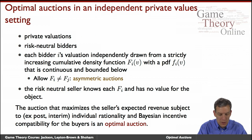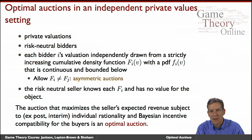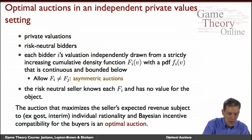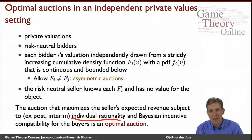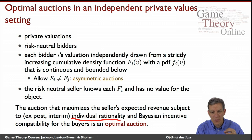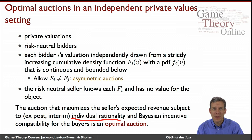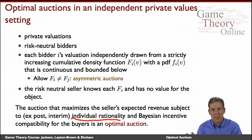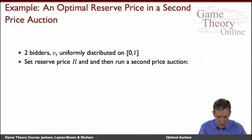The optimal auction here is one that maximizes the seller's expected revenue subject to some form of individual rationality. In this case, it won't matter much which type of individual rationality we impose — ex post or interim — since we can move things around given the risk neutrality and transferability. We want Bayesian incentive compatibility and we need to make sure that buyers don't want to walk away from the auction.